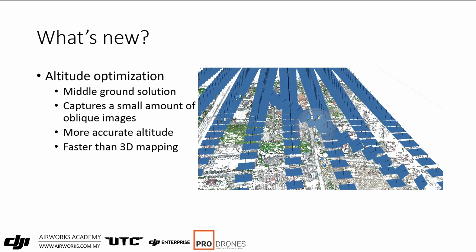Altitude optimization is a middle-ground solution — you still get the efficiency of 2D mapping and still get some 3D data. It ends with a small amount of oblique images: once your 2D mapping flight is complete, from the endpoint the camera tilts to an oblique angle and flies toward the center of the work area, capturing images along the way to offset altitude inaccuracies.